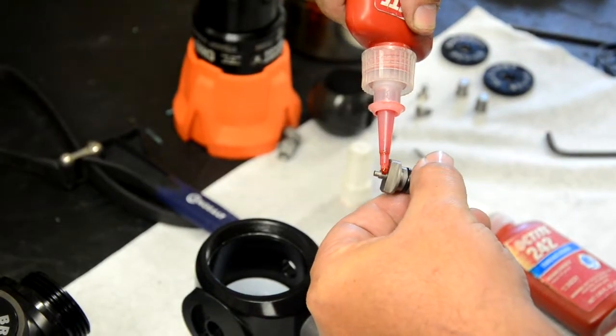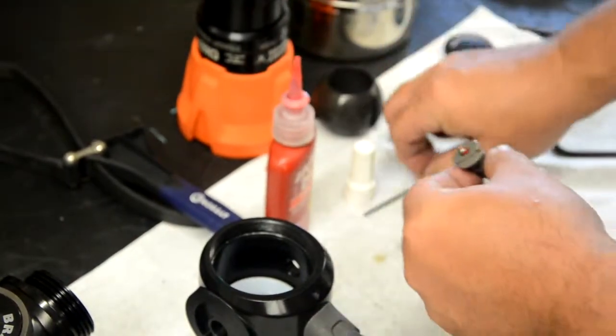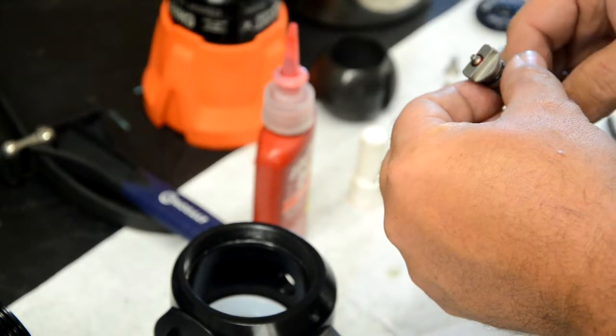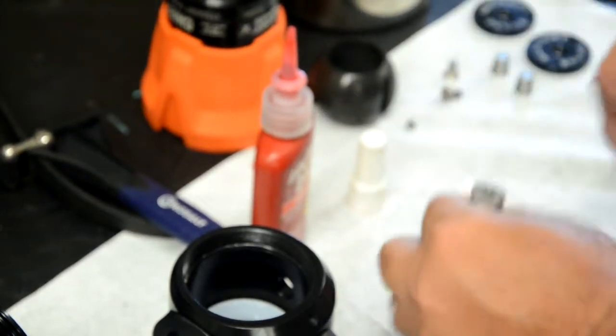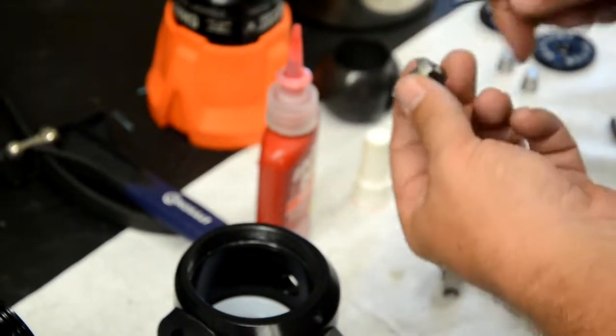After applying the Loctite, back the dog point set screw back into the actuator shaft until it's flush. Be sure to apply Dow Corning number 7 silicone grease to the o-rings on the actuator shafts as well.